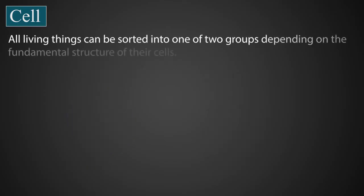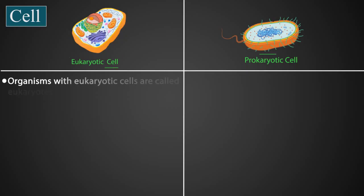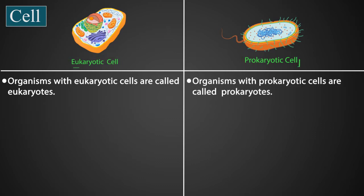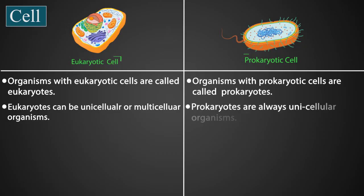All living organisms can be sorted into one of two groups depending on the fundamental structure of their cells. These two groups are eukaryotes and prokaryotes. Organisms with eukaryotic cells can be unicellular or multicellular, whereas prokaryotes are always unicellular organisms.